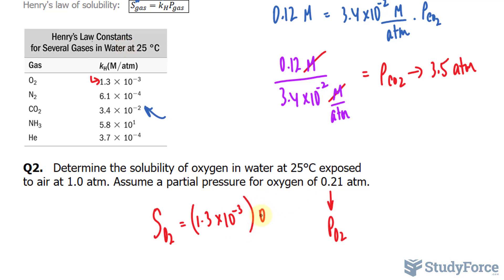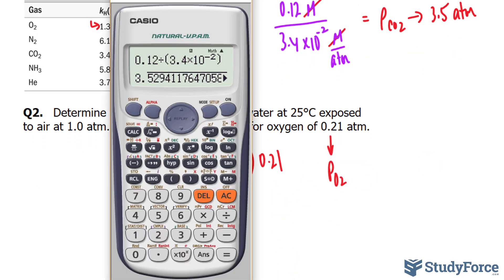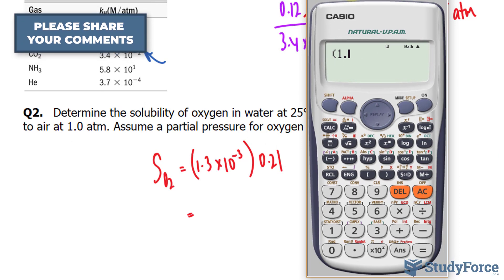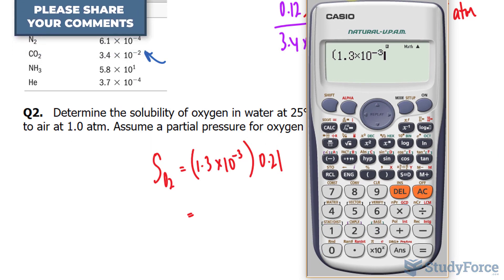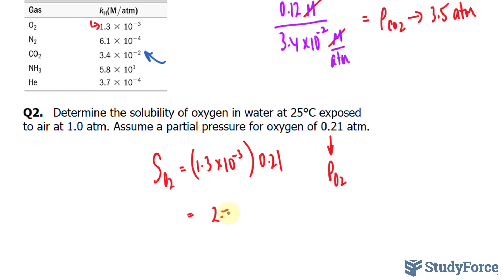Multiply to 0.21 atmosphere, using our calculator really quickly, 1.3 times 10 to the power of negative 3 times 0.21 gives us an answer of 2.73 times 10 to the power of negative 4. And to two significant figures, that's 2.7 times 10 to the power of negative 4 molars.